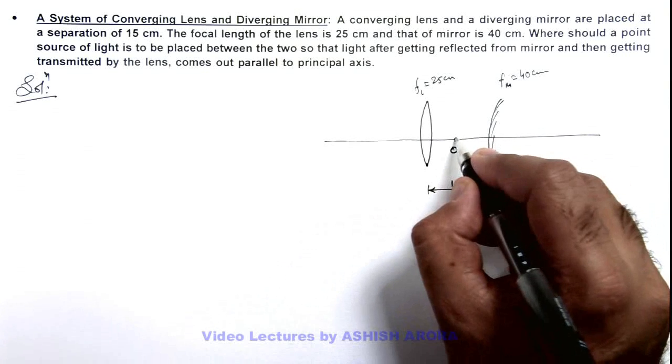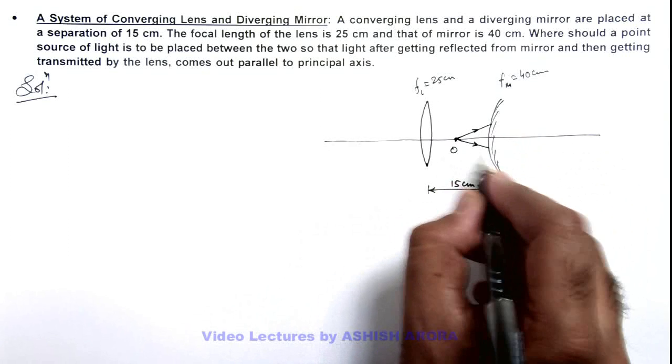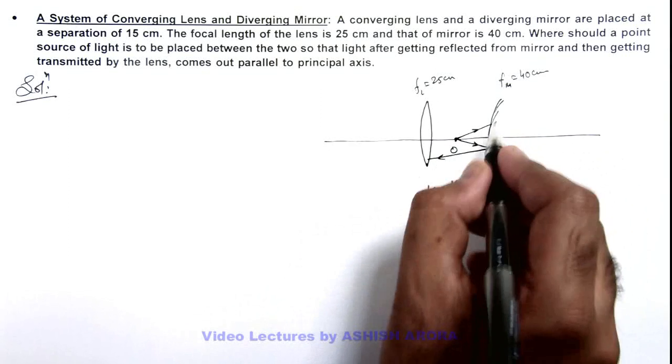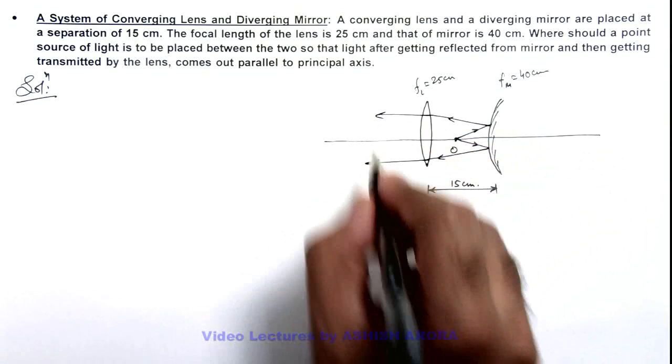So that when light is reflected from this diverging mirror and finally incident on this lens, then these light rays should come out parallel to the principal axis.